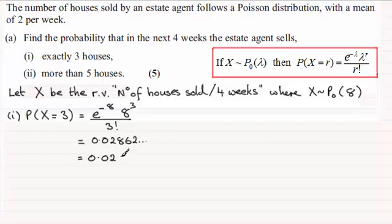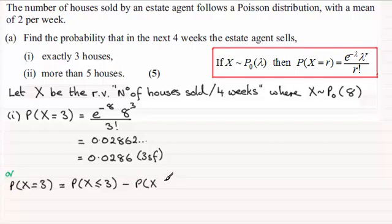Now I did say you could do it using the cumulative probability Poisson probability tables. To do that, if we're looking for the probability that X equals three, we say that this is the probability that X is less than or equal to three, so that's the probabilities of X equaling zero, one, two, and three, and then from that subtract the probability that X is less than or equal to two, so that would just leave us with three.